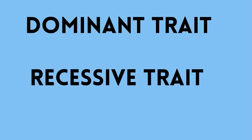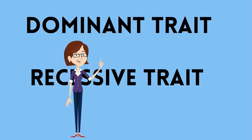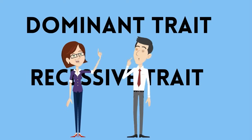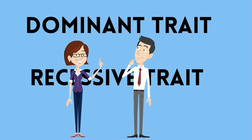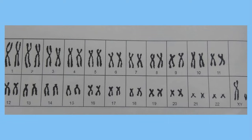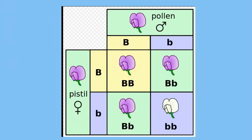Traits can also be dominant or recessive. Each individual has two alleles for each gene, one coming from each female and the other from the male. With dominant traits, an individual carries two dominant genes or one dominant and one recessive gene. A dominant gene can be expressed even if only one copy of the gene is present.